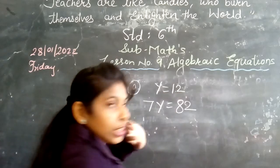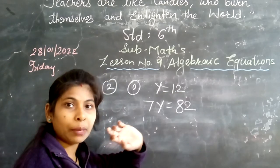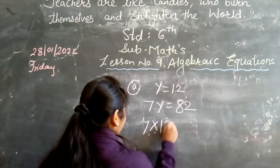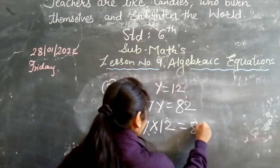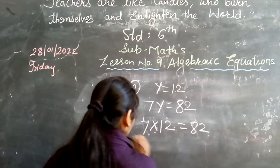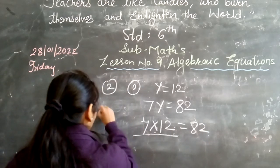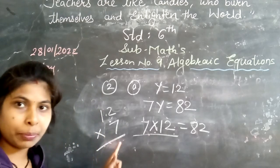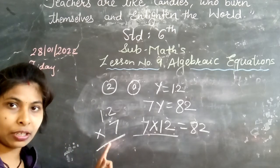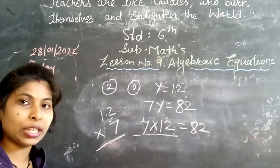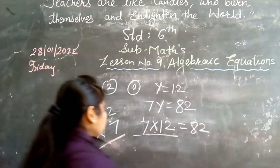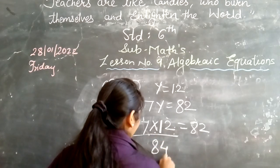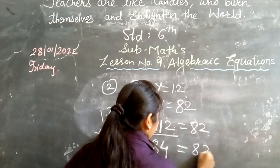7y — y की value यहाँ पे 12 दी हुई है. So, 7 multiply 12 is equal to 82. Left hand side में 12 multiply 7 दिया है, यह आपको multiply करके देखना है. और कितना answer आता है? 84. और right hand side में 82 है.